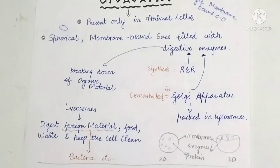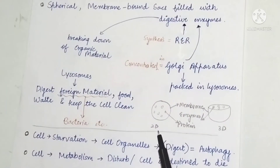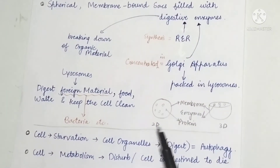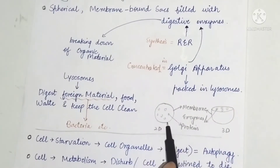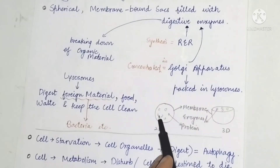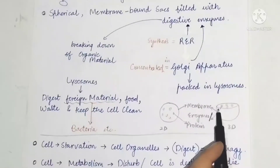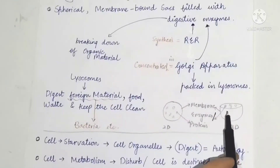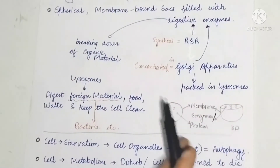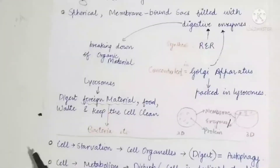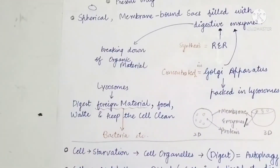Lysosomes are spherical membrane-bound organelles packed with digestive enzymes formed via the rough endoplasmic reticulum and Golgi apparatus. Here is a simple 2D diagram and a 3D diagram — the membrane is on the outside with enzymes and proteins present inside.